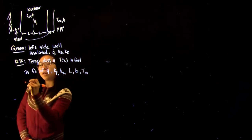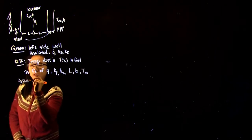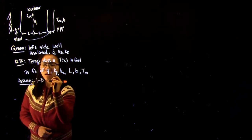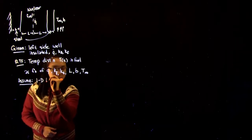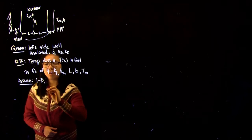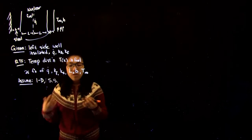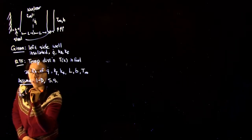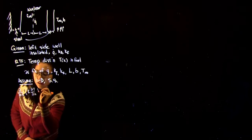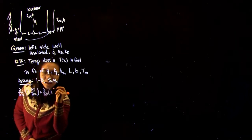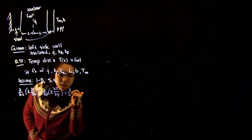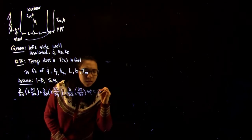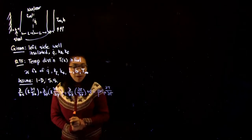The first thing we can do is write down our assumptions. We want to assume that everything is happening at steady state and that there's only one-dimensional heat conduction. So we assume that the system is one-dimensional and we have steady state.